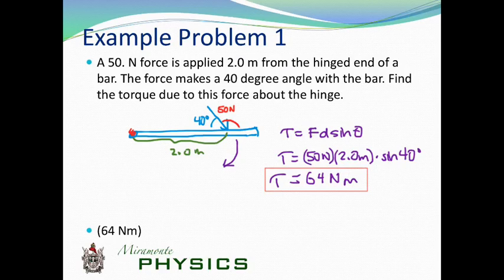Notice the units: force times distance gives Newton·meters. This is similar to work, which is also force times distance, but work has an energy relationship — so there we used joules. Torque isn't an energy thing; it's a rotational thing, so we leave it in units of Newton·meters. Even though you could call them joules, it seems wrong because torque isn't about energy.